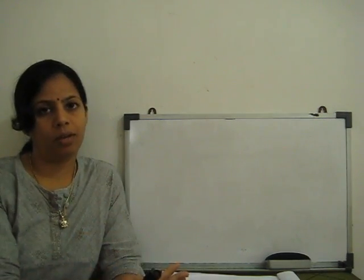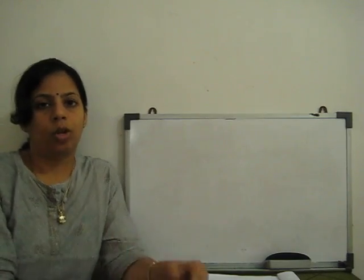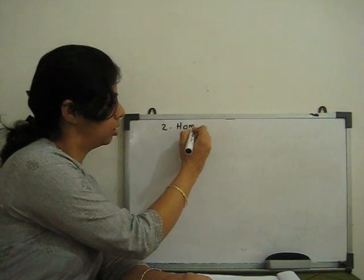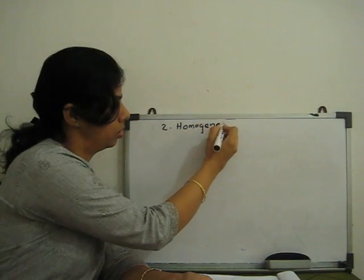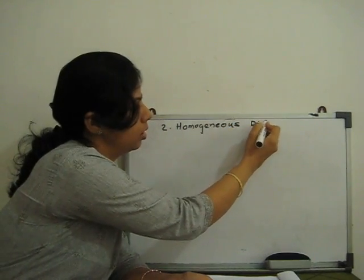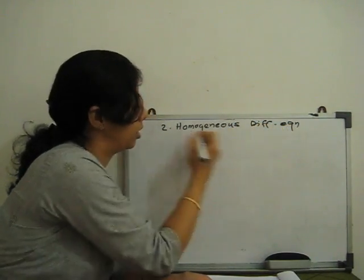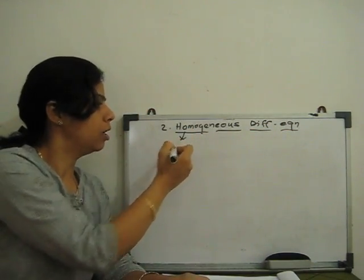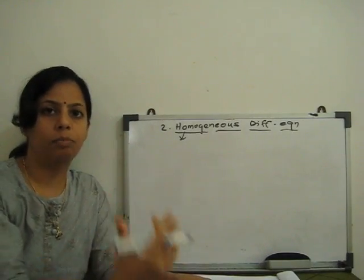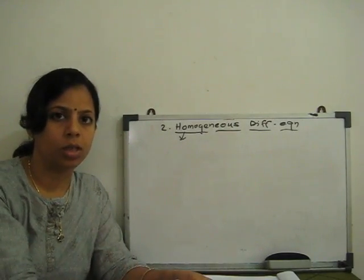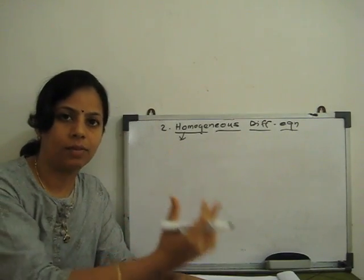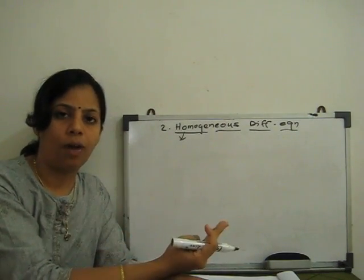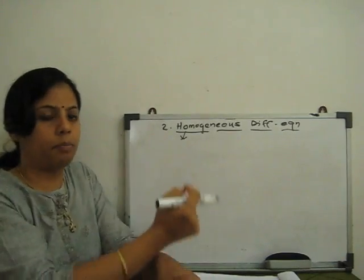We separate the variables x and y and then integrate. Today I have to teach you the second topic: homogeneous differential equation of first order, first degree. So, what is the meaning of the word homogeneous? Homogeneous, in simple terms: whatever differential equation has x and y terms — a function of x and y — in that function the power of y and the power of x both have the same power.